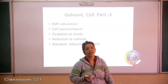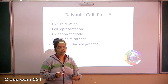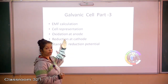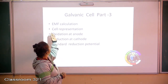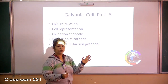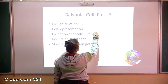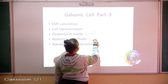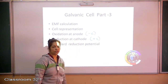Good morning students. In today's class I'm talking about the galvanic cell, the third part of it. Before we go on to the third part, we need to revamp what we know about the cell and the EMF calculation. This representation of the cell: oxidation always happens at the anode, which is loss of electrons; reduction always happens at the cathode, which is gain of electrons.